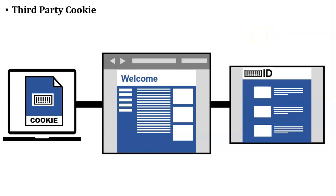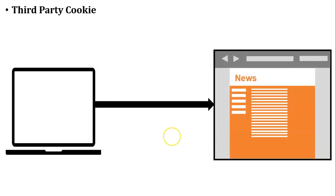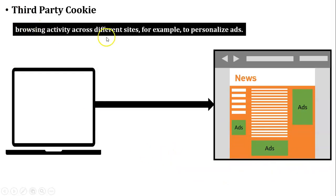That server which gets the unique ID of the user can fetch the user's data — that is called a third-party cookie. For example: a user accesses an e-commerce website and searches for a wireless router, then closes the website. The user then opens another website, like a news website. Some ads displayed on the news website are based on the user's last search — the wireless router search on the e-commerce website. This is called browsing activity across different sites, for example to personalize ads. That is the actual purpose of third-party cookies.